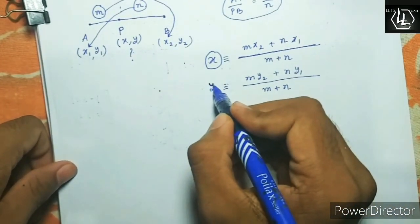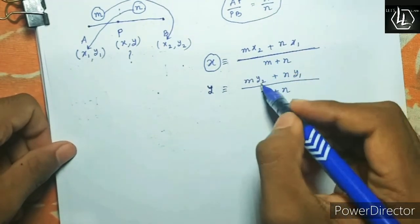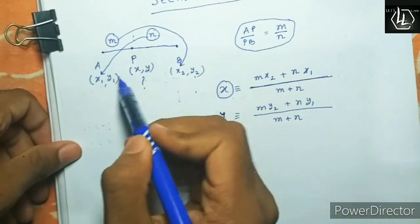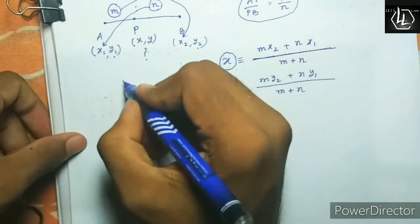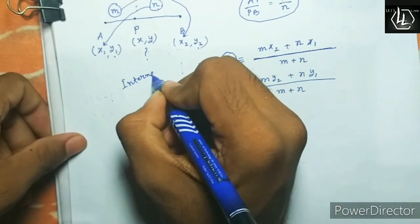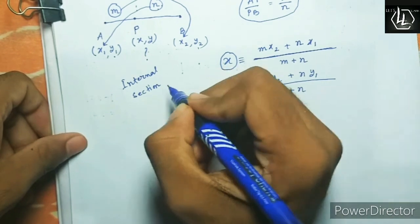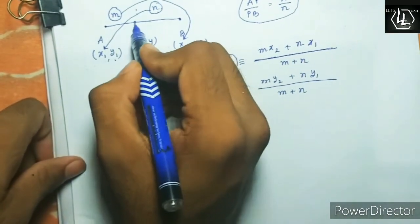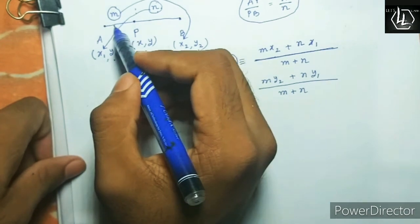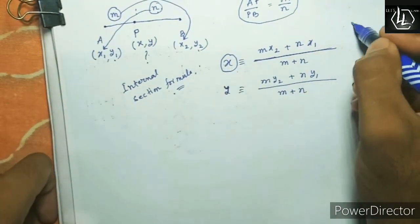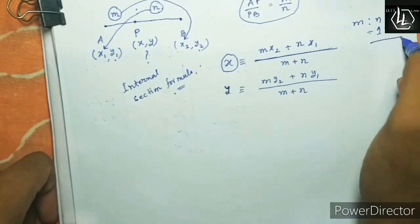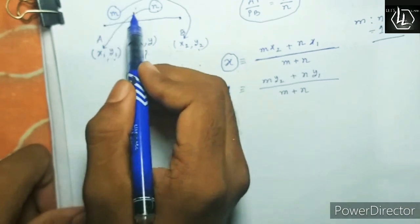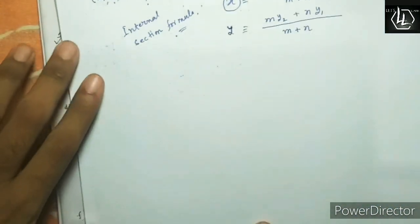For the ordinate, we simply replace x2 by y2 and x1 by y1 — giving M times y2 plus N times y1 divided by M plus N. This is the internal section formula. A special case is bisection, where M to N equals 1 to 1, meaning P bisects the line segment AB equally.